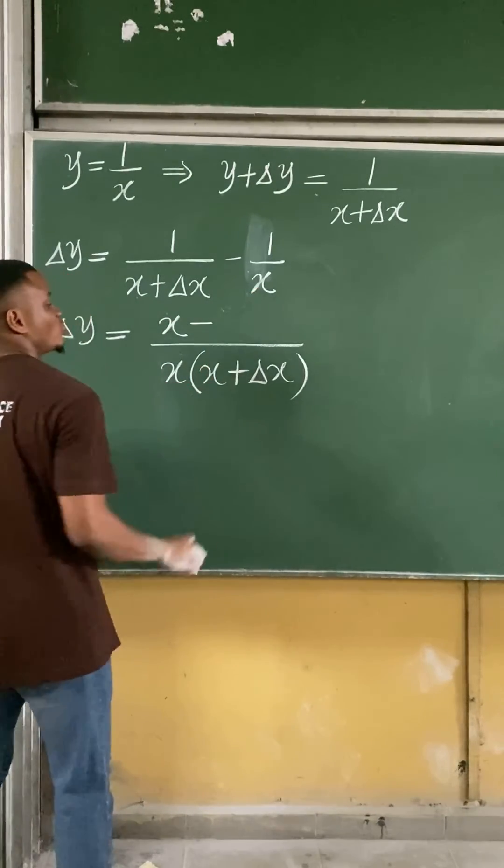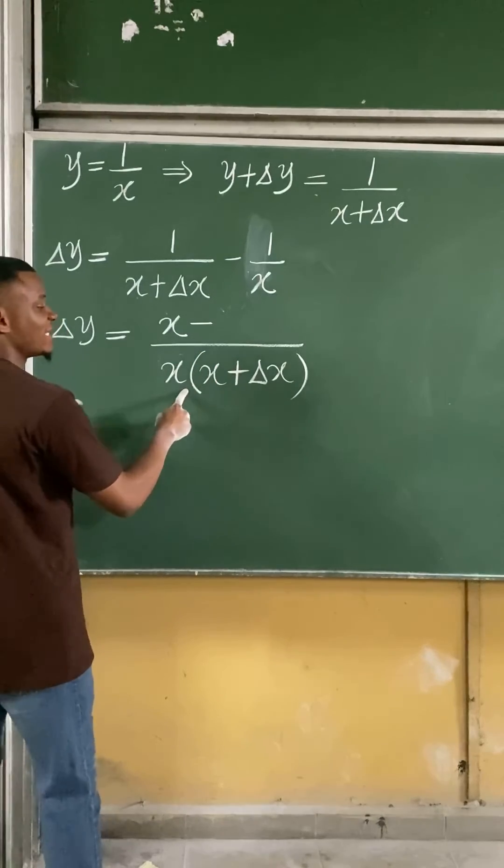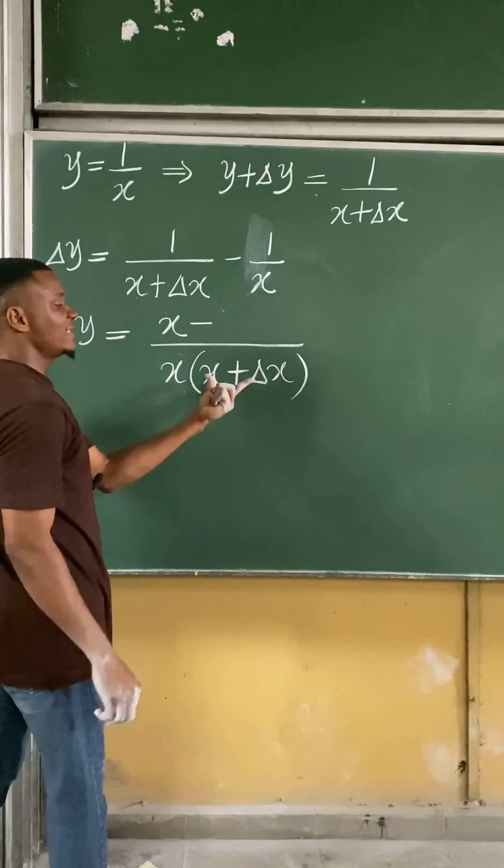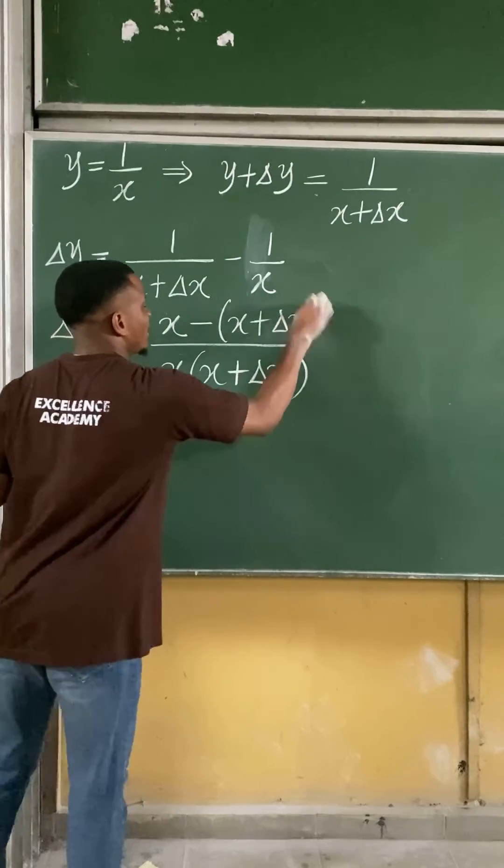Divide this by this. So if this divides this, x will cancel out x, leaving you with x plus change in x. This multiplying 1 gives you x plus change in x. I have this.